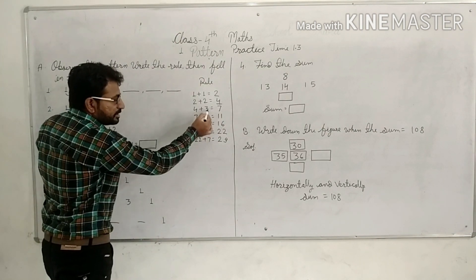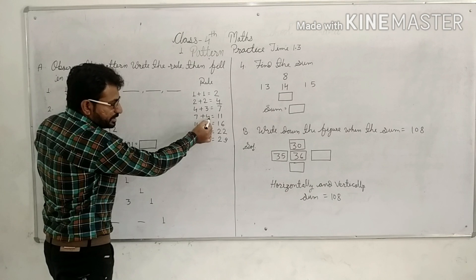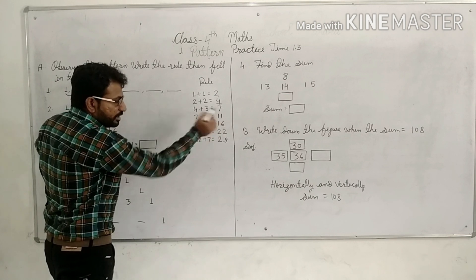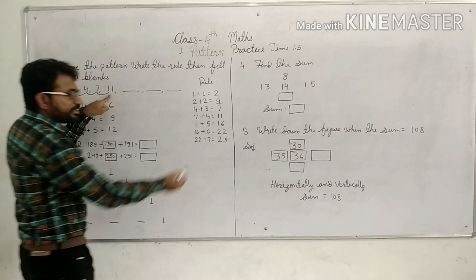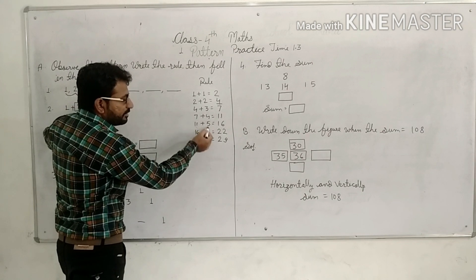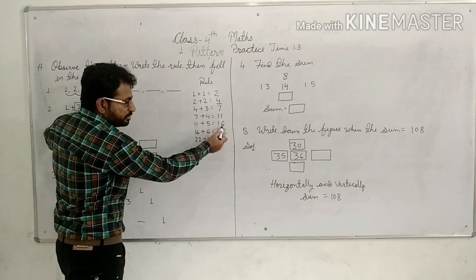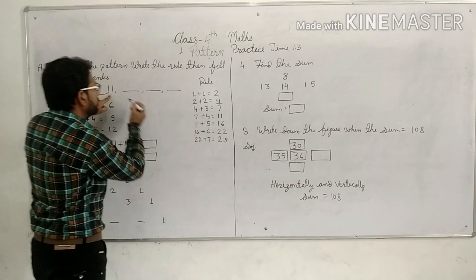Then next rule, 7 plus 4. So 7 plus 4 is 11. Here are 11. Then 11 plus 5, 11 plus 5 is 16. So what are the rule? 16.